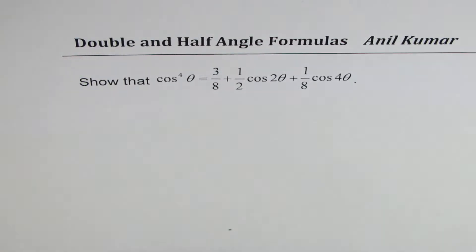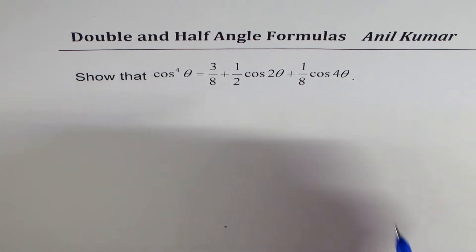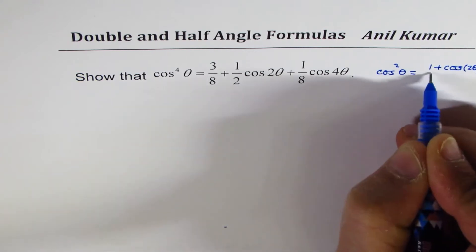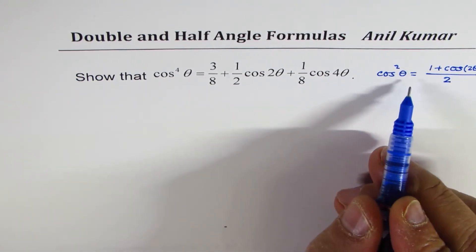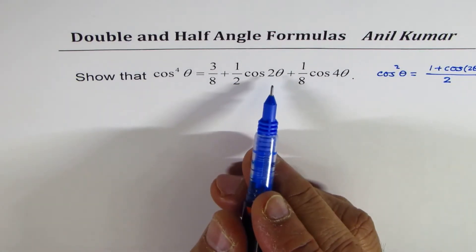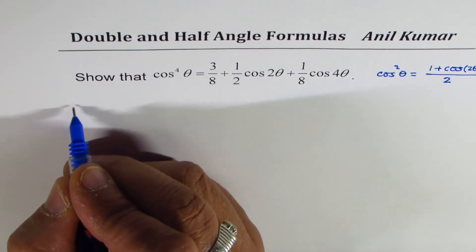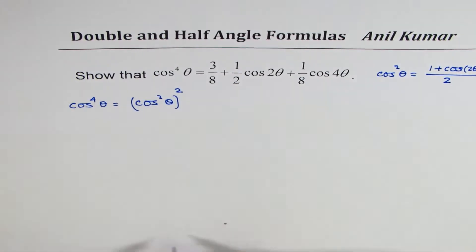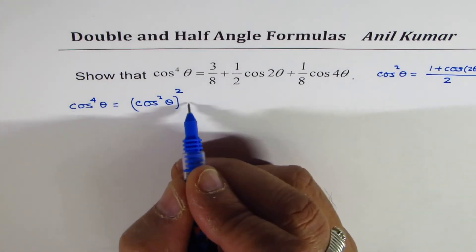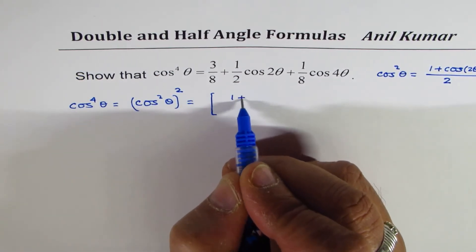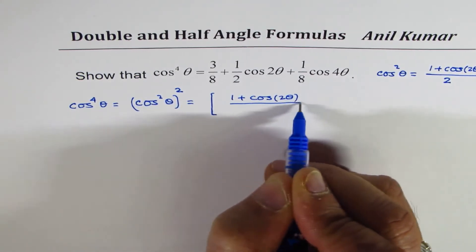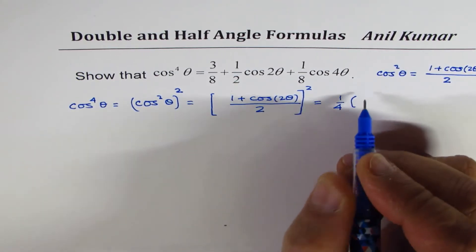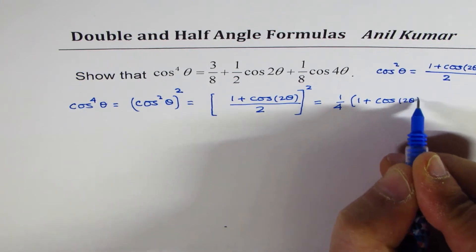Let me rewrite the formula we just derived: cos squared theta equals 1 plus cos 2 theta divided by 2. We are going to use this formula to prove the identity in this question. So what is cos to the power of 4 theta? Cos to the power of 4 theta can be written as cos squared theta, whole squared. Substituting, this becomes 1 plus cos 2 theta over 2, whole squared, or equivalently 1 over 4 times 1 plus cos 2 theta, whole squared.